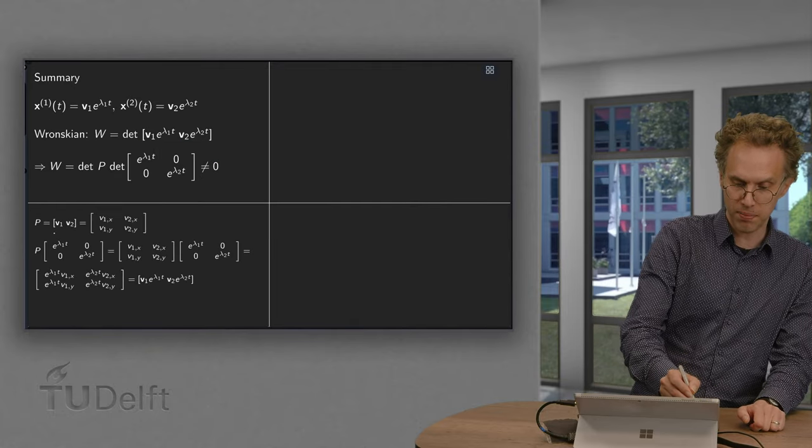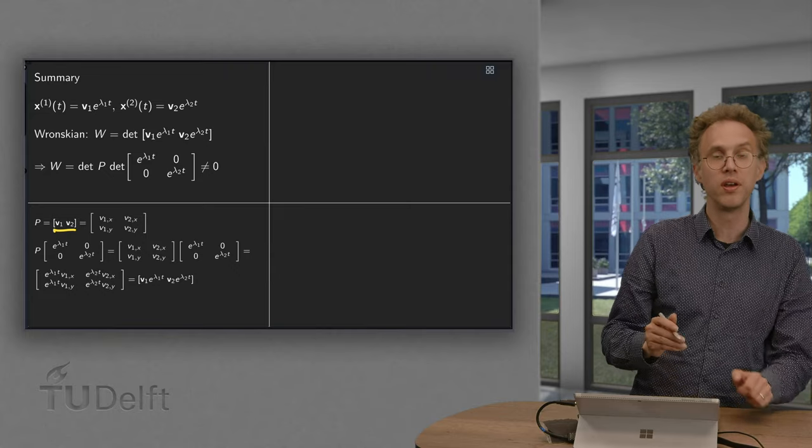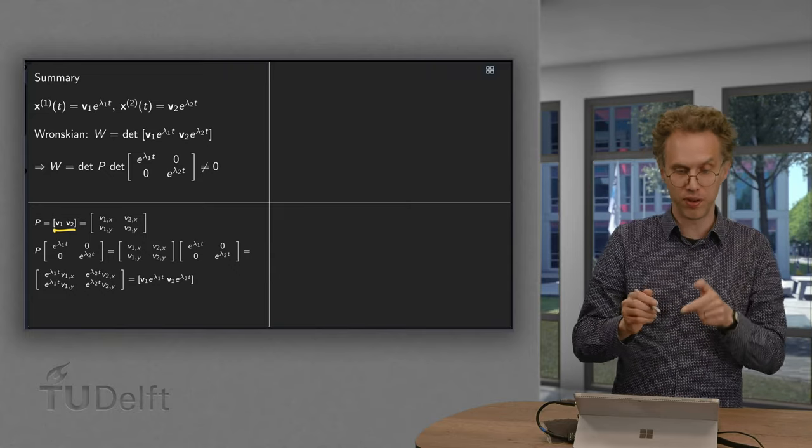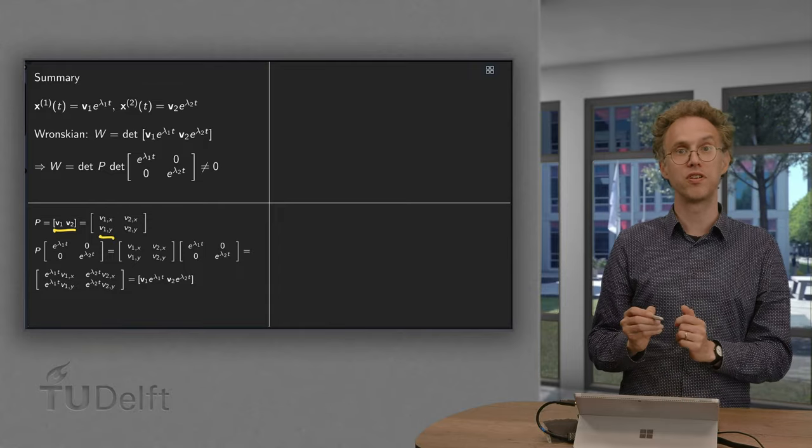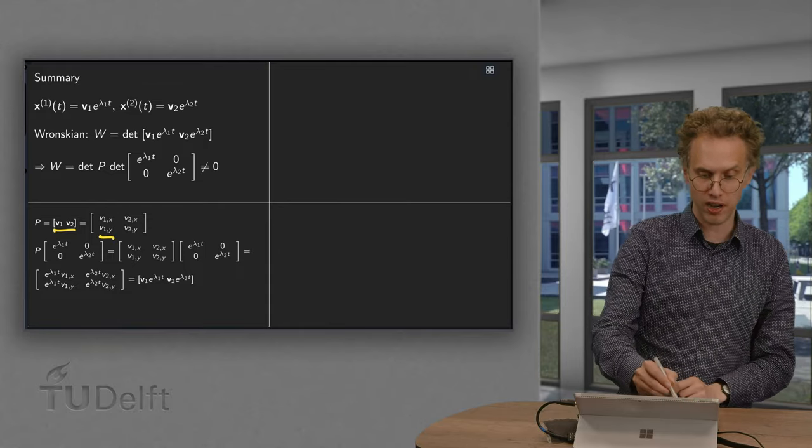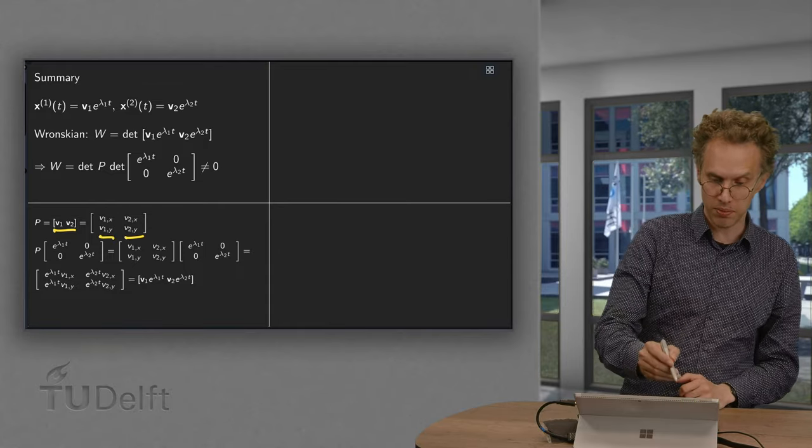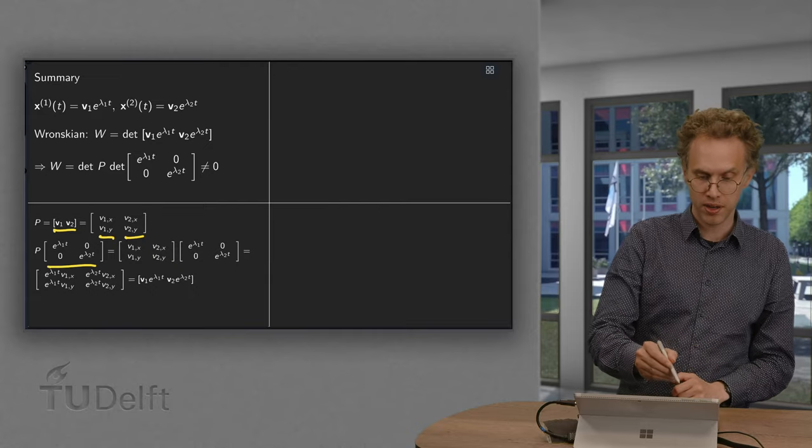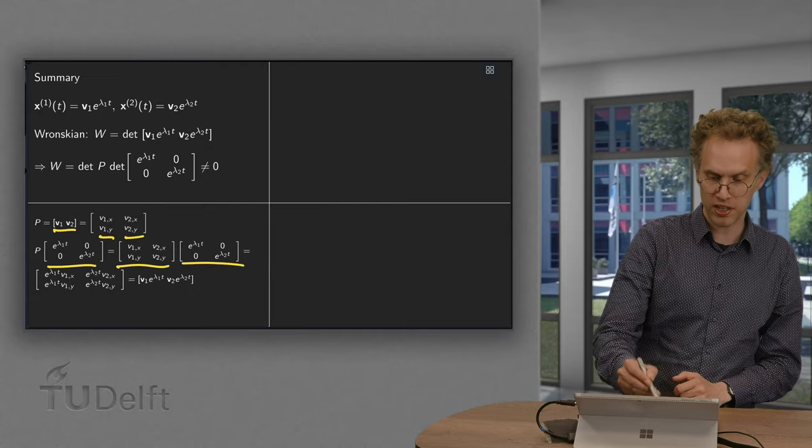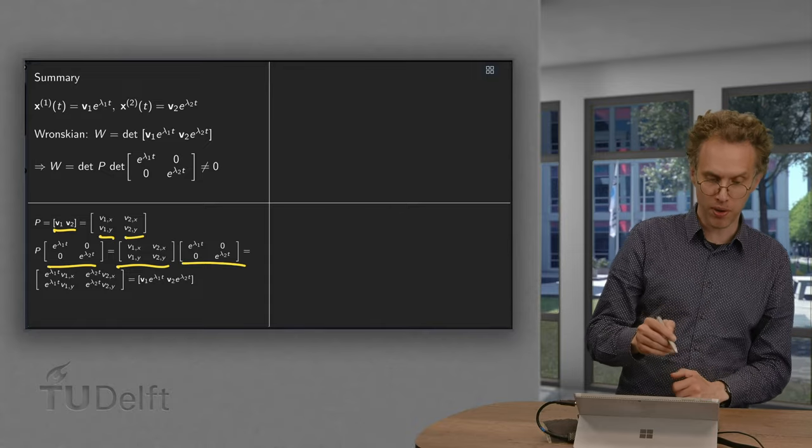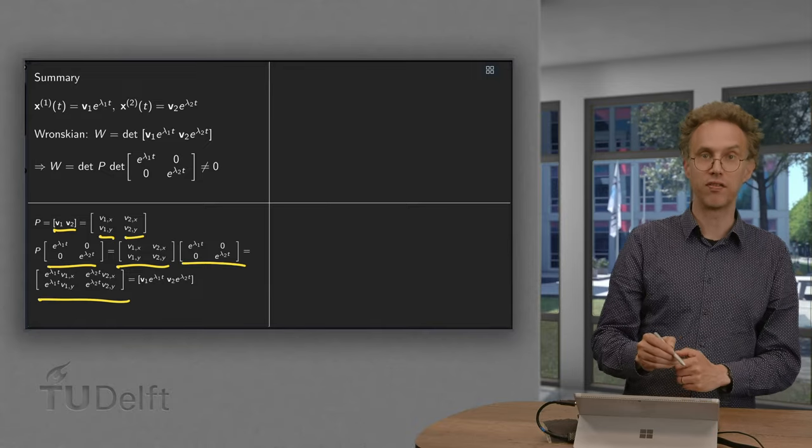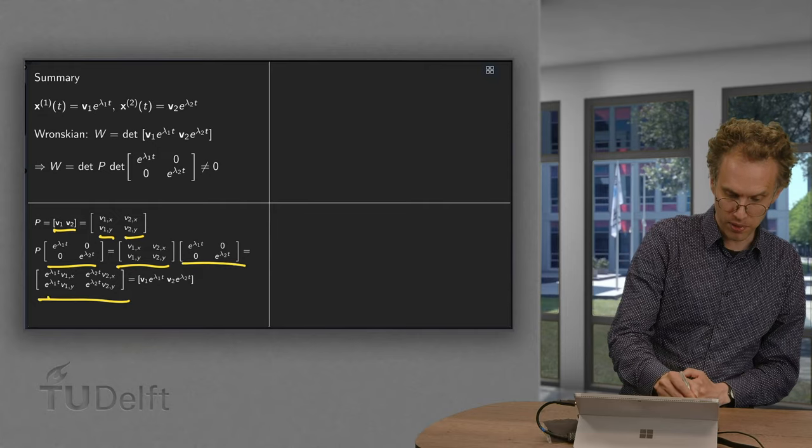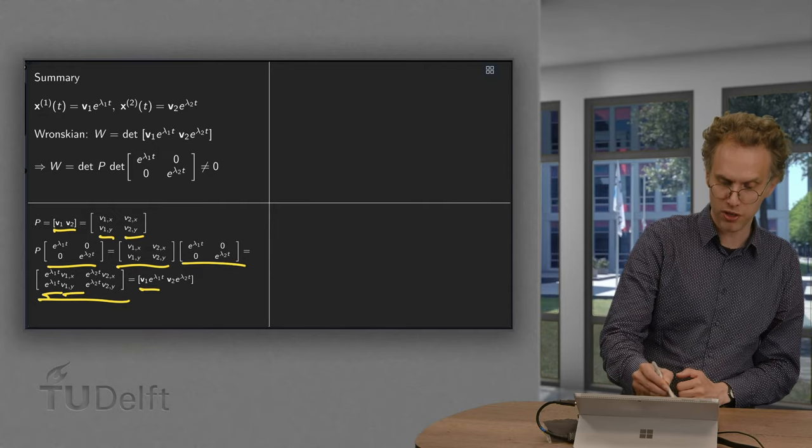You can write p as v1 v2. The components of v1 are v1x and v1y. Components of v2 are v2x and v2y over here. Then you can compute p times this matrix over here. Here we have our p, here we have the other matrix. Compute all components. We see that you get this matrix over here, which is exactly the same as e to the power lambda 1t times v1 as first column.